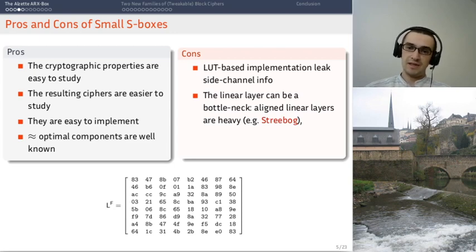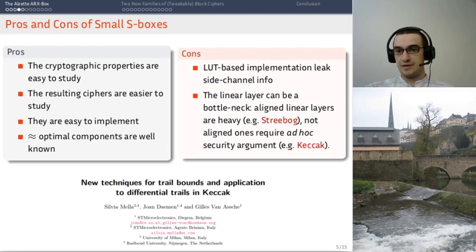And that can be a bottleneck in terms of performance. So you can have a linear layer which is strongly aligned like in the hash function Streebog, where the linear layer is this dense 8 by 8 matrix. Or you can have linear layers which are not aligned with the words in the s-box. In which case it can be more efficient, but then it's more difficult to study.